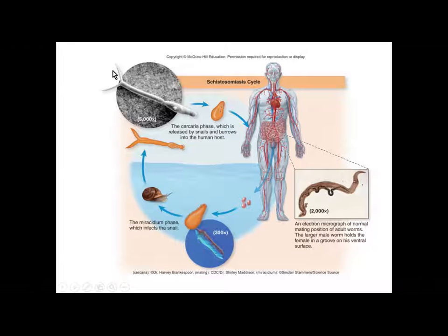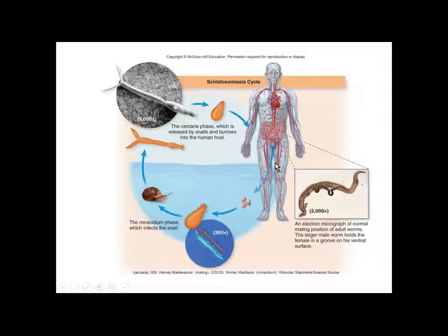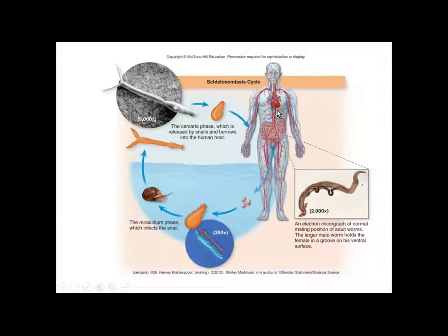The life cycle begins with larvae burrowing directly through the skin — and this is what is particularly terrifying about this fluke. It can burrow directly through the skin, get into the bloodstream, and enter the adult stage. Eventually it will mature, and eggs will be passed through the digestive tract into the water supply, infecting snails, which then release larvae that can burrow back into the next human host.